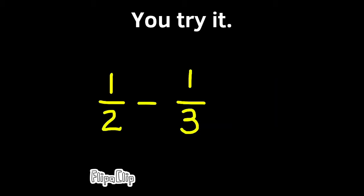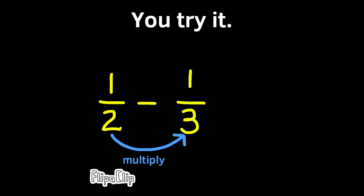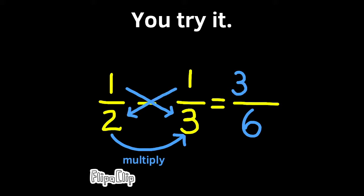Now it's your turn to try it. Go ahead and do 1 half minus 1 third. Pause the video if you need to. Let's see how you did. Remember, the first step was multiply the denominators. 2 times 3 equals 6, so the common denominator is 6. The second step is multiply the left side numerator by the right side denominator. 1 times 3 is 3, and 1 times 2 is 2. This represents 3 sixths minus 2 sixths, which is equal to 1 sixth.